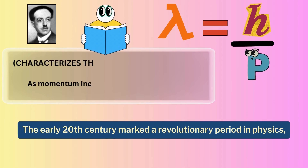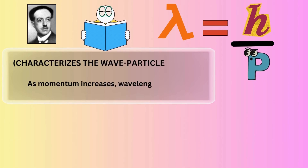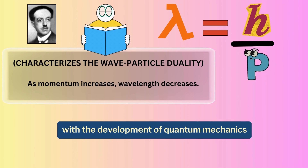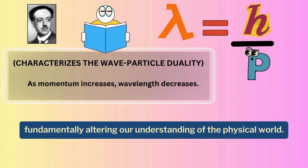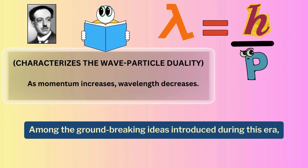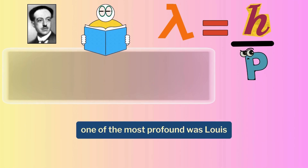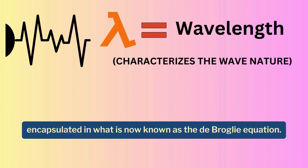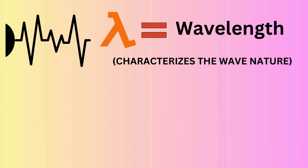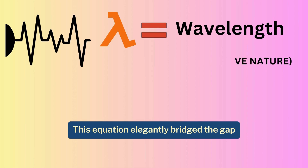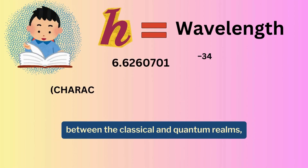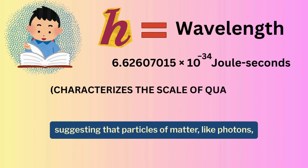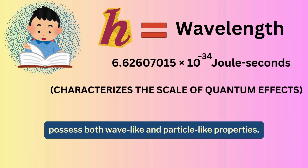The early 20th century marked a revolutionary period in physics, with the development of quantum mechanics fundamentally altering our understanding of the physical world. Among the groundbreaking ideas introduced during this era, one of the most profound was Louis de Broglie's hypothesis of matter waves, encapsulated in what is now known as the de Broglie equation. This equation elegantly bridged the gap between the classical and quantum realms, suggesting that particles of matter, like photons, possess both wave-like and particle-like properties.